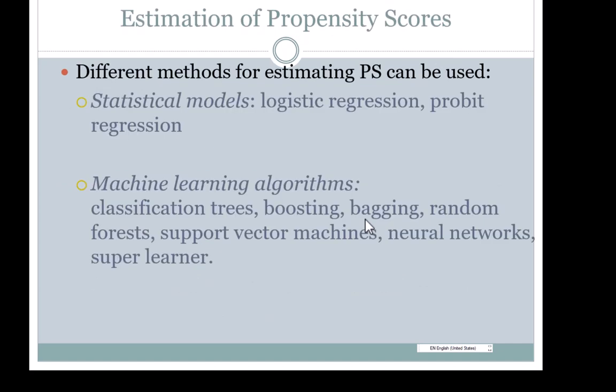For estimating propensity scores there are many methods. They can be broadly classified into statistical models such as logistic regression and probit regression — logistic regression is by far the most common — and machine learning algorithms such as classification trees, boosting, bagging, random forests, support vector machines, neural networks, super learner, and many more.